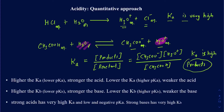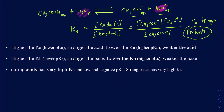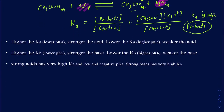The take-home message is: a higher Ka reflects a lower pKa — we'll talk about that in a moment. Higher Ka means a stronger acid and lower Ka means a weaker acid, and the same applies to bases. A higher Kb means a stronger base, and a lower Kb means a weaker base.